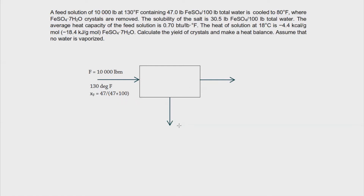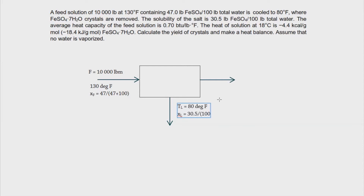The outlet temperature is 80 degrees Fahrenheit, so T sub L equals 80°F. This means both the crystal formation and the liquor leaving the crystallizer are at 80°F. We know that at 80°F the solution is saturated at 30.5 pounds ferrosulfate per 100 pounds of water. So X sub L equals 30.5 divided by (100 + 30.5), which is 30.5 over 130.5.